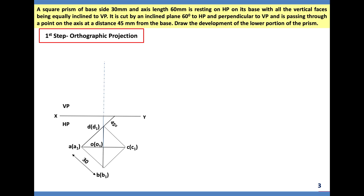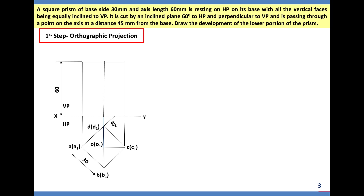On the 45 degree line construct the square, draw diagonals to get the center point — side size 30 mm — and name the corners. Draw vertical projectors; the axis height is equal to 60 mm as given. The axis line is covered by the visible edge. For notations: observer can see A-A1 → A′-A1′; B-B1 can be seen → B′-B1′; behind B-B1 is D-D1 → represented in brackets D′-D1′; C-C1 can be seen → C′-C1′.